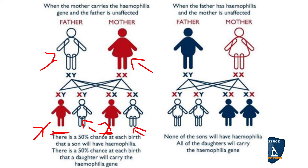In this cross, the affected son is hemophilic while the mother is unaffected — she is a carrier. The father is also unaffected (normal). The mother carries the recessive hemophilia gene, which is why she is phenotypically normal but passes the gene to offspring.